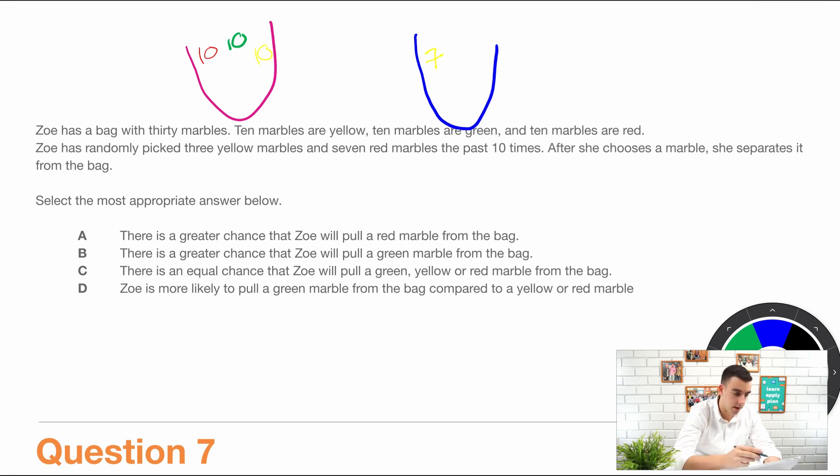And she picked seven red ones. So that leaves three red ones and then 10 green. So that's the current state.